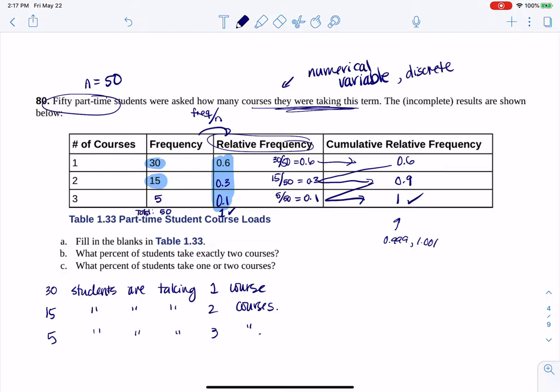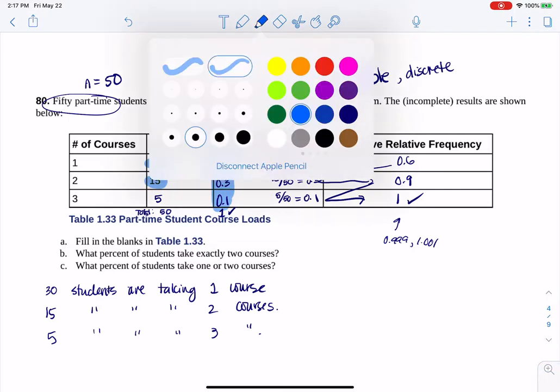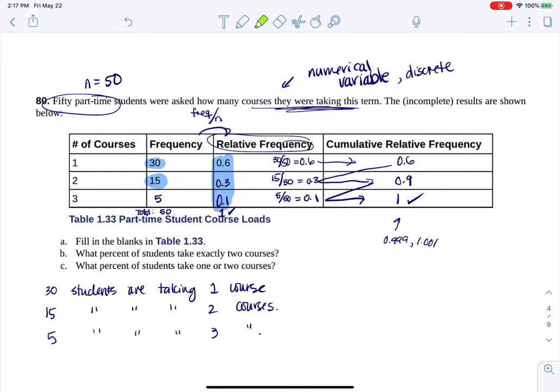Okay, so next thing to take note of is it says what percent of students are taking exactly two courses. So I see percent here. That means I want a relative frequency. I want a relative frequency, or another word for that, we could say proportion, we could say a percentage. It's a fraction, it's a ratio, something to that effect. It's not a whole number.